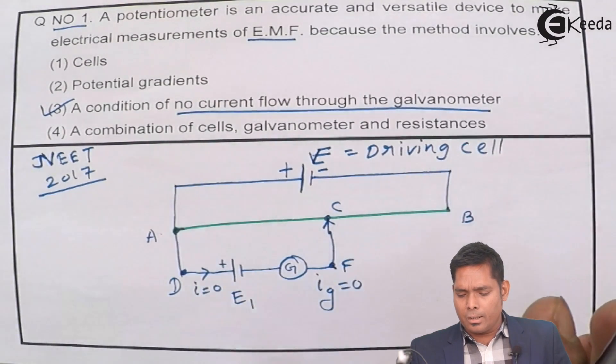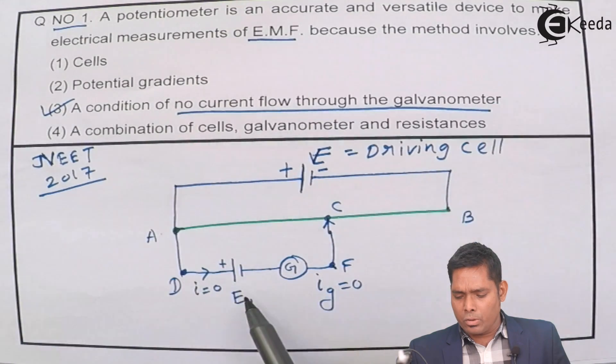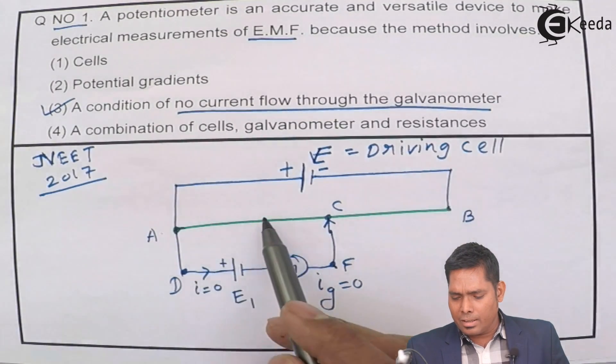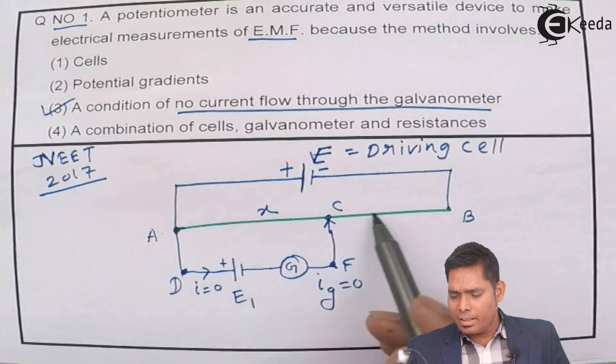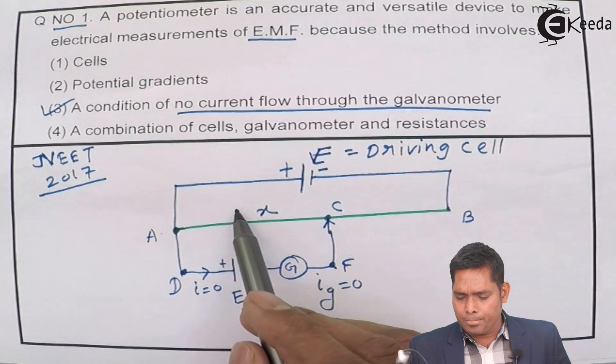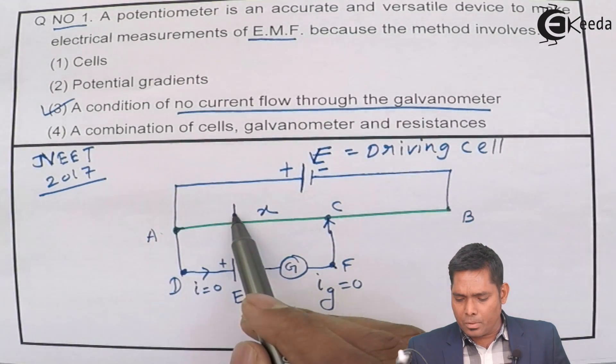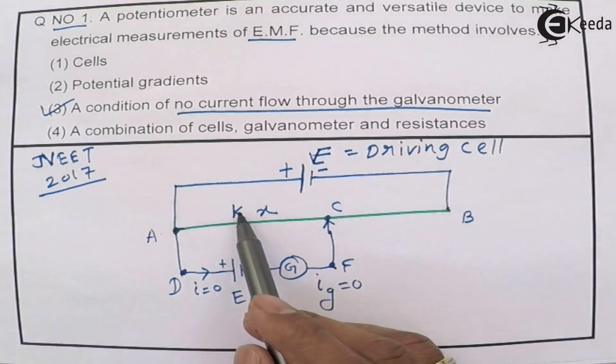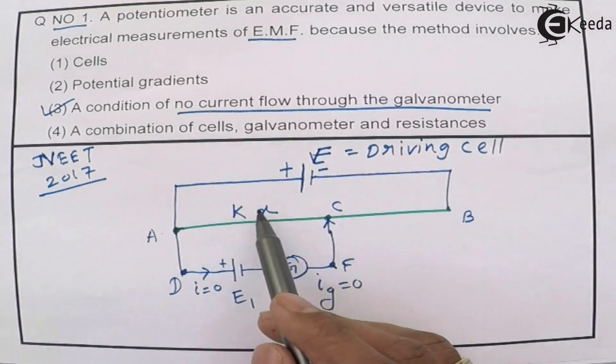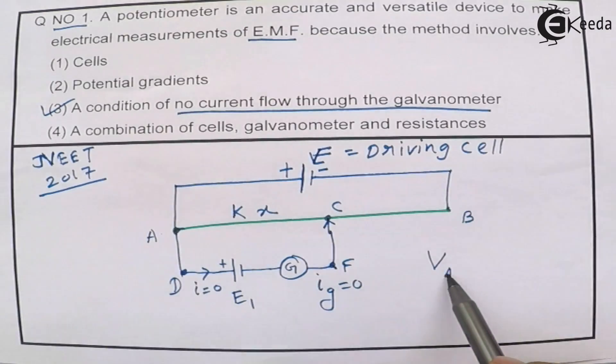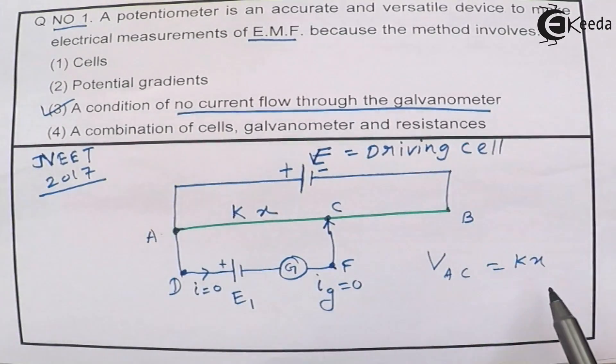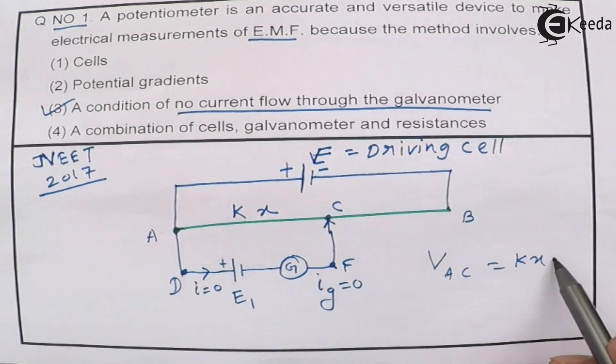So this is the basic principle. So we don't know this even suppose that this length is X and the potential gradient of this wire suppose is K, then this K into X.